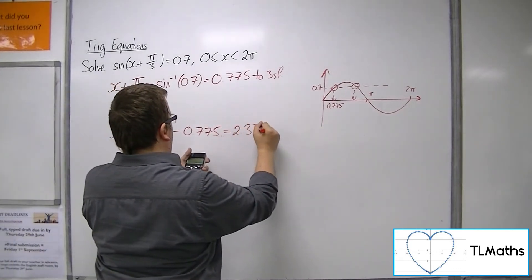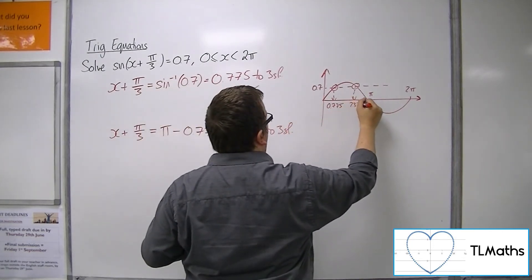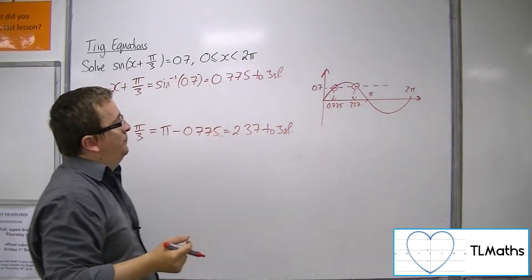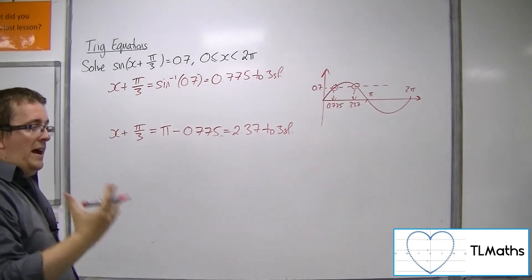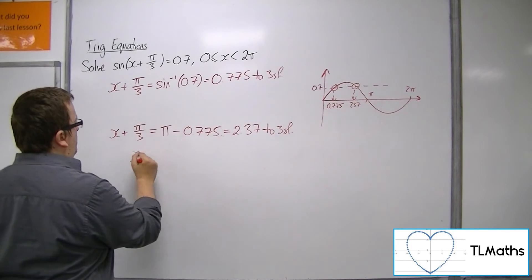So 2.37 to 3 sig fig. Like so. Now apply the transformation. So subtract π/3 from both sides.